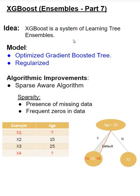To summarize, the sparsity awareness has two particular points. XGBoost only visits non-missing entries and it learns a default direction from the data for the missing entries.